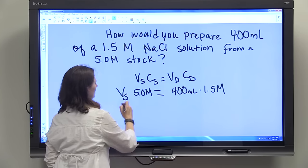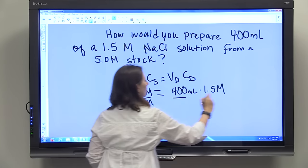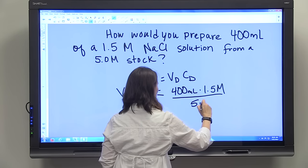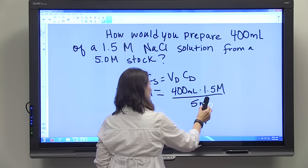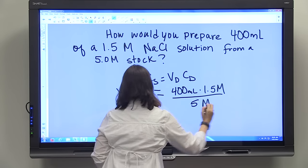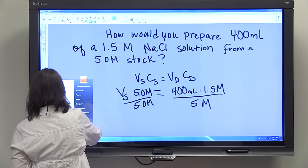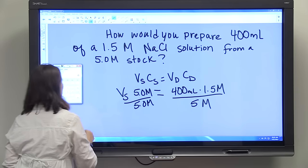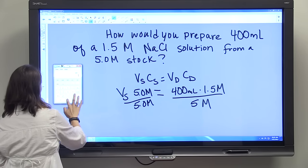Just use your calculator: 400 times 1.5 divided by 5.